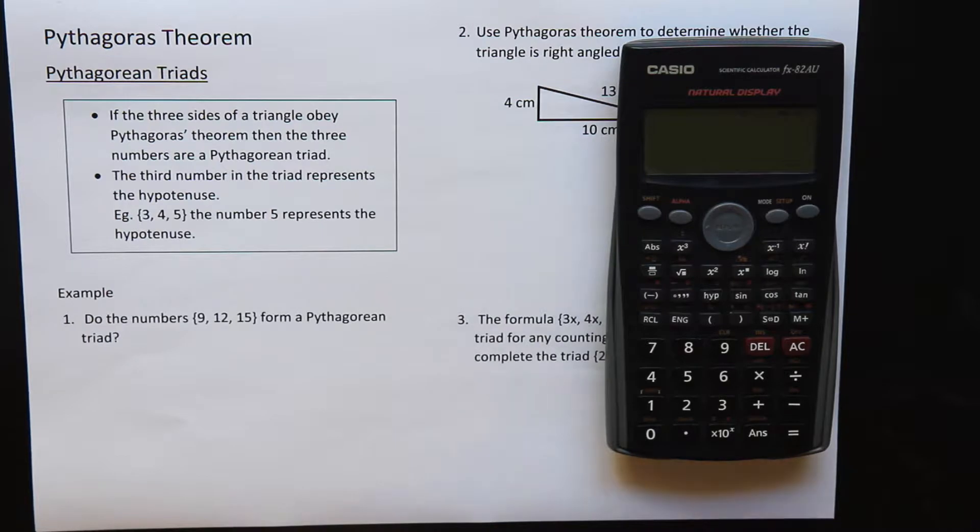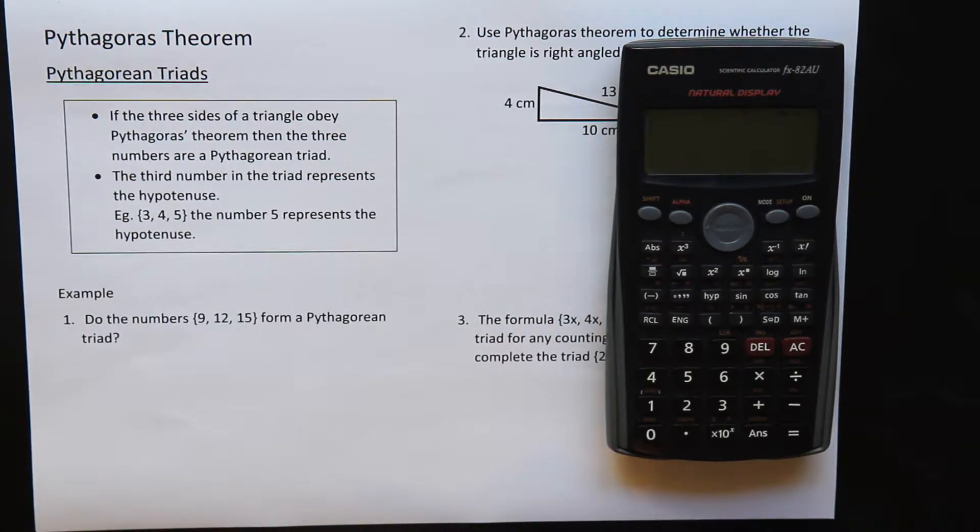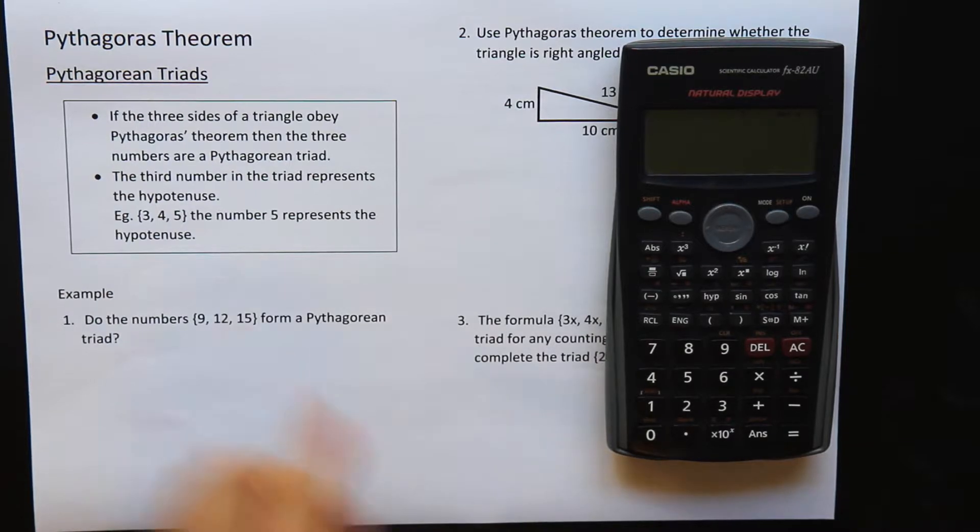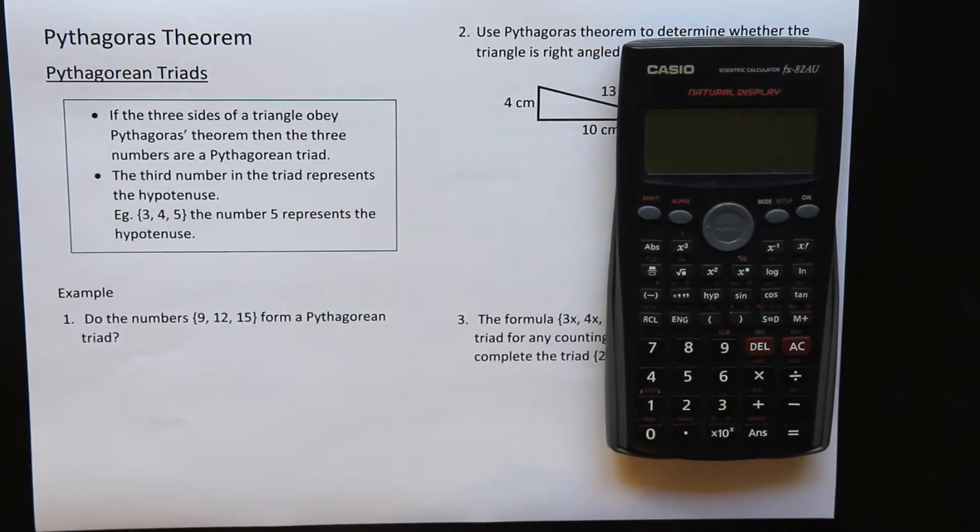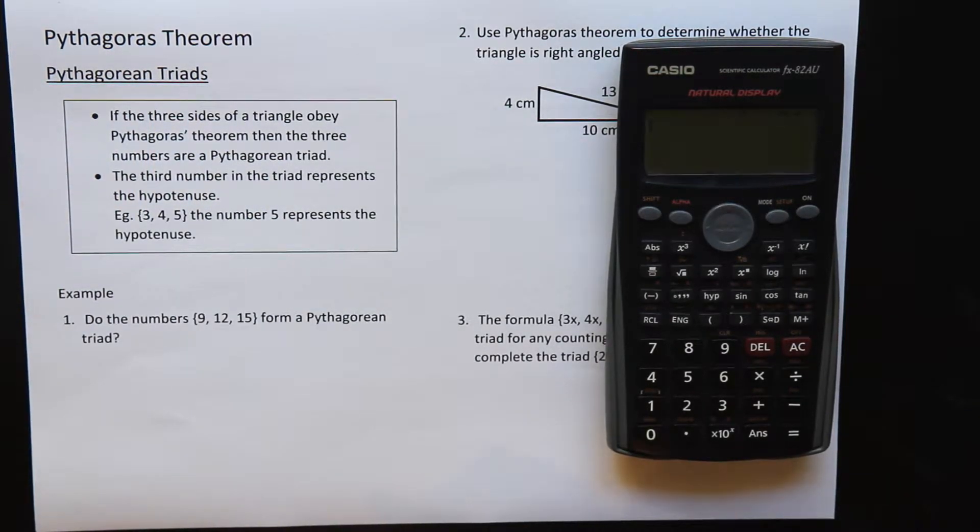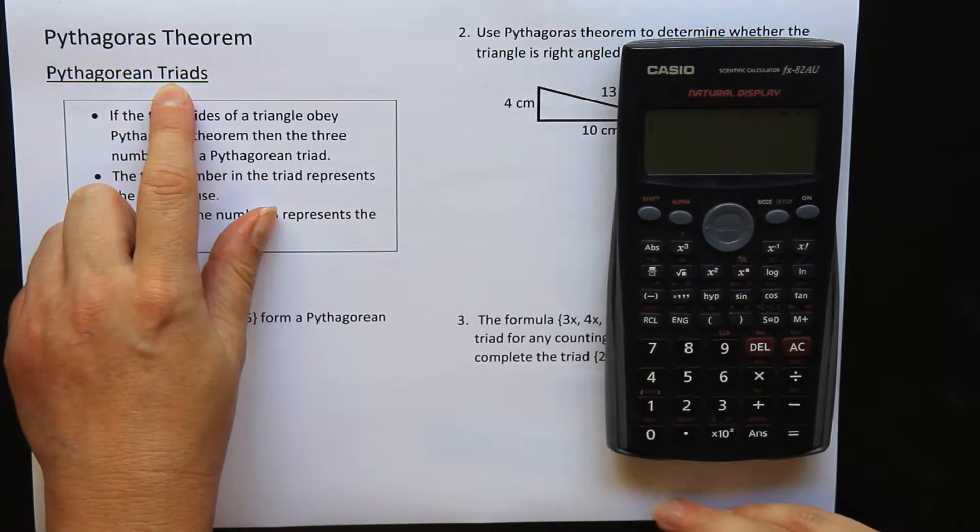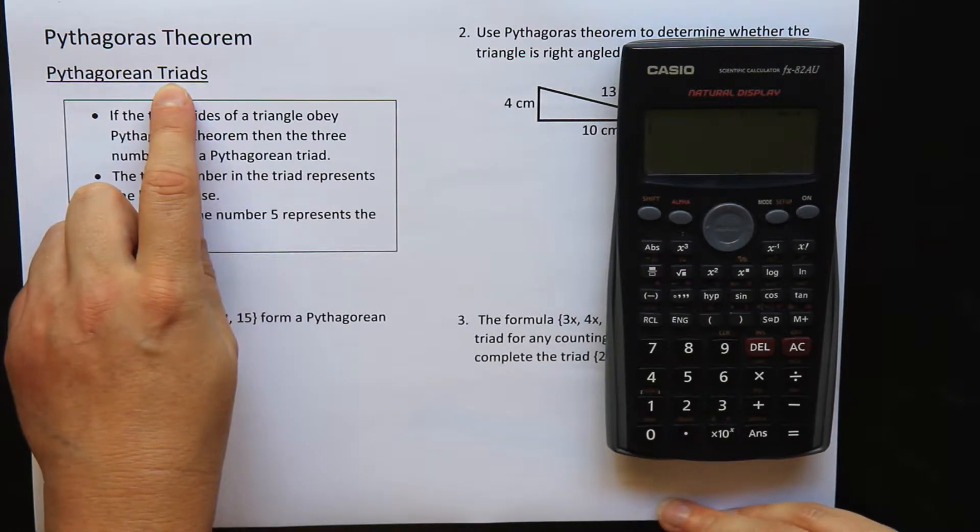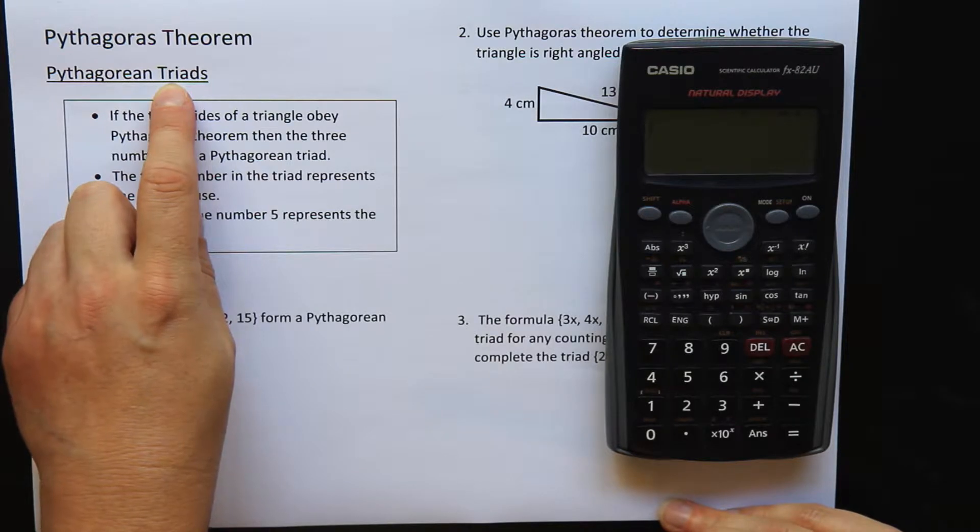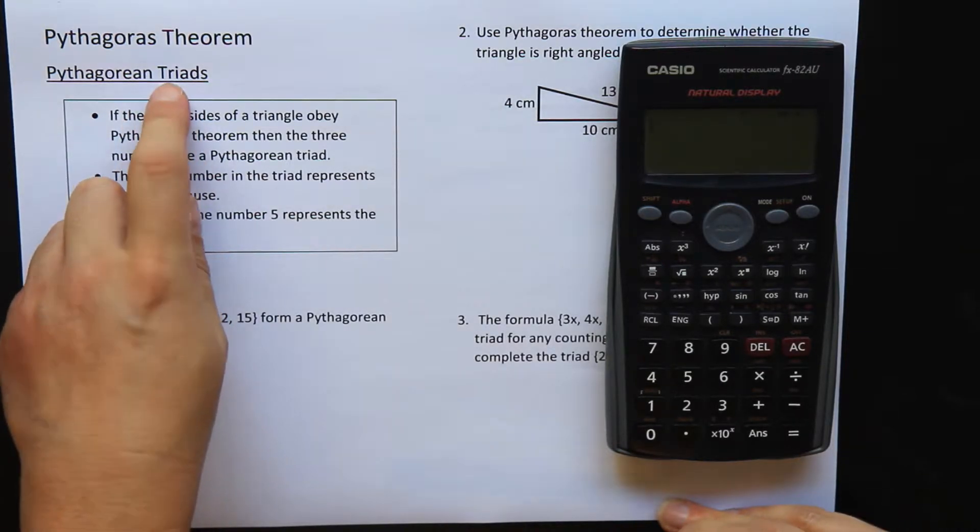Hi everyone, this is Jo from MathTudemy. Today we're doing some Pythagoras' Theorem and we are looking at Pythagorean triads. Now maybe you haven't heard of a triad before, but I'm sure you've heard tri used in lots of different words like triangle or triathlon or even tripod. Tri just means three.